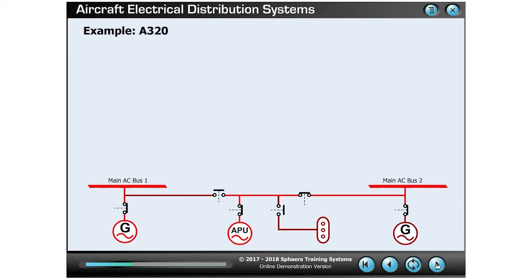During normal operation, AC bus 1 also provides power to a third busbar known as the AC essential bus. If required, the supply can be switched to AC bus 2 by operation of the AC essential feed push button.